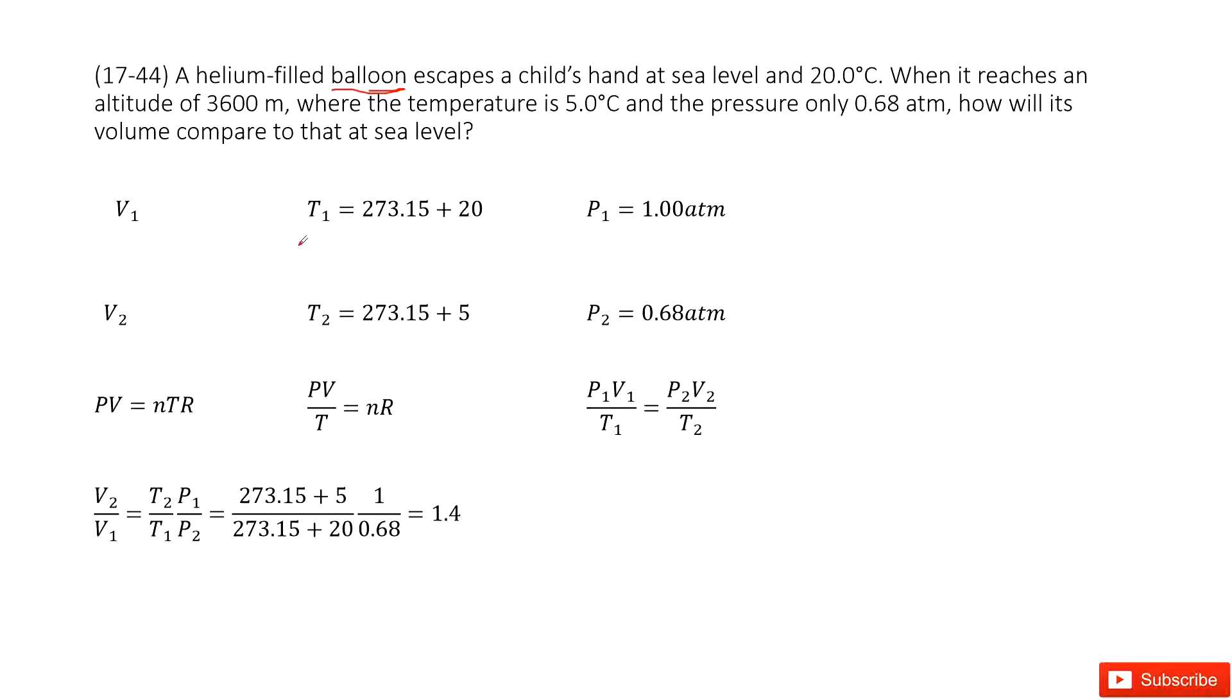But we know that T1, 20 centigrade, we converted in unit Kelvin. And the pressure, it tells us sea level. So sea level, P1 is 1 atm. Agree? Yes.